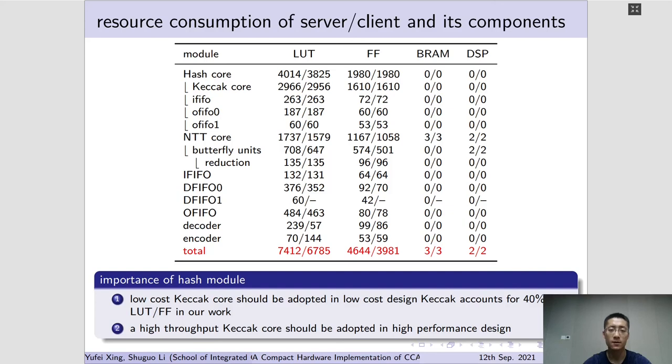In our design, the adapted Keccak core consumes 40% LUT, 35% FF of the whole design. If a low-cost design is expected, the first thing is to select a low-cost Keccak core.